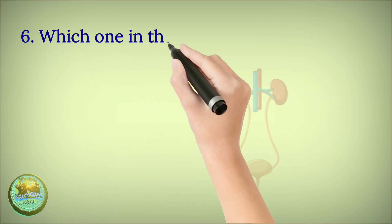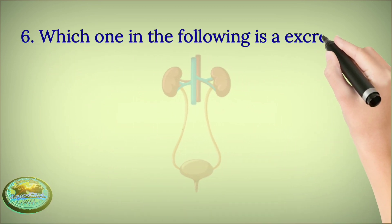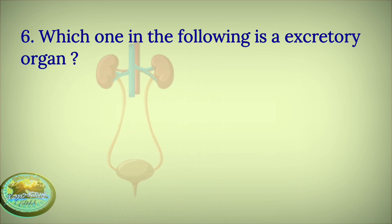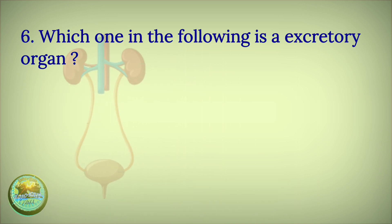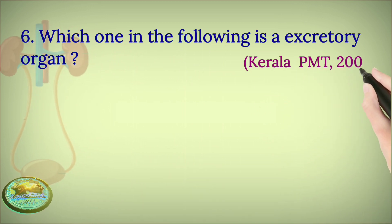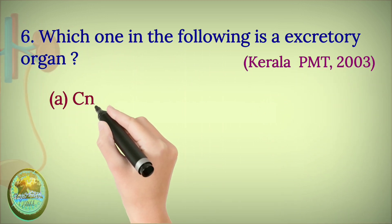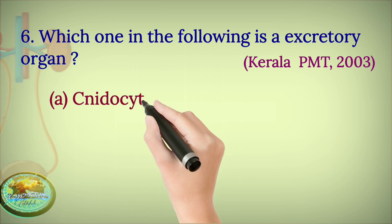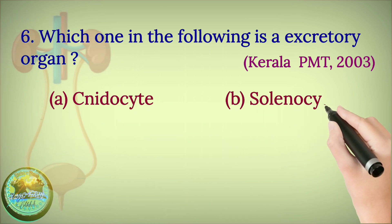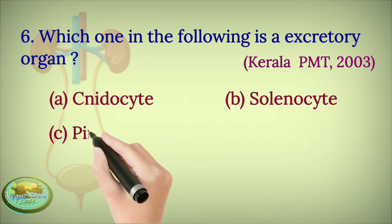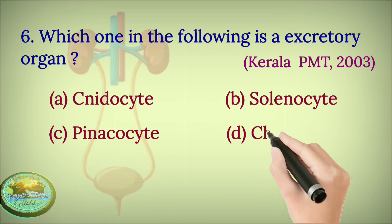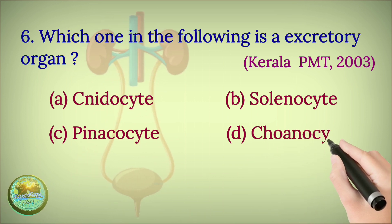Question 6: Which one of the following is an excretory organ? Neurocyte, solenocyte, pinacocyte, or choanocyte?